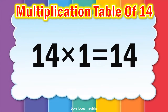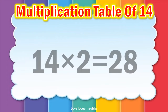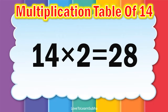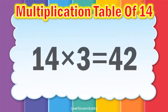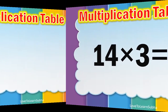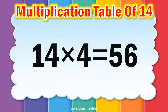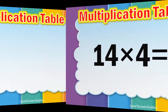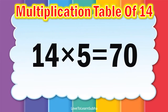14 ones are 14, 14 twos are 28, 14 threes are 42, 14 fours are 56, 14 fives are 70.